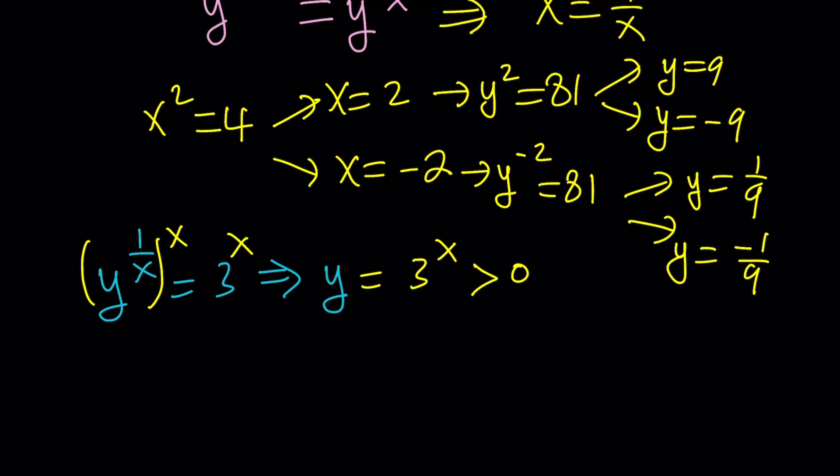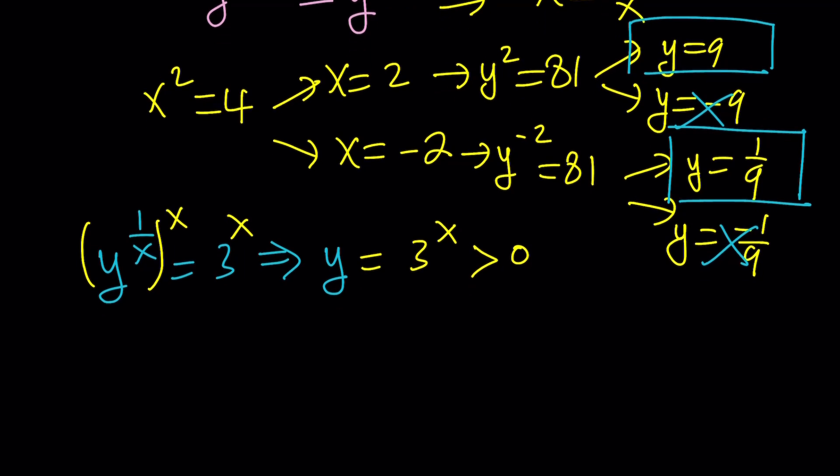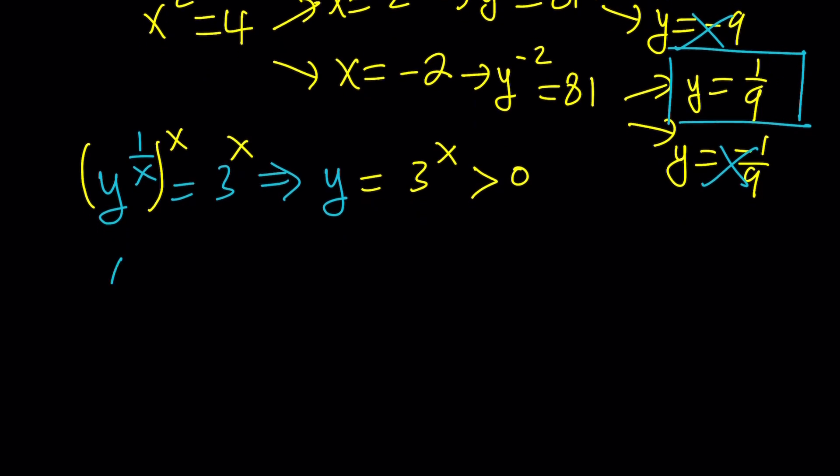So that gives us a restriction that y values have to be positive. We have to reject negative 9 and negative 1 ninth, and that leaves us with y equals 9 and y equals 1 over 9. Let's write these as ordered pairs, and then we're going to take a look at the second solution method. But before that, we can also plug it in and check our work. We got x equals 2, y equals 9, so that gives us (2, 9). Or we got negative 2, 1 over 9. Again, y values are supposed to be positive in this case.